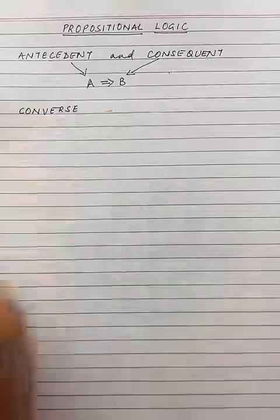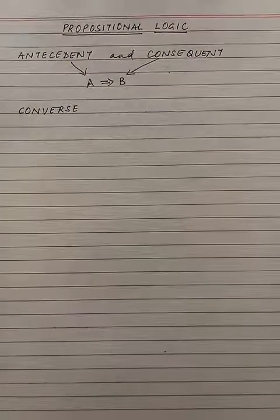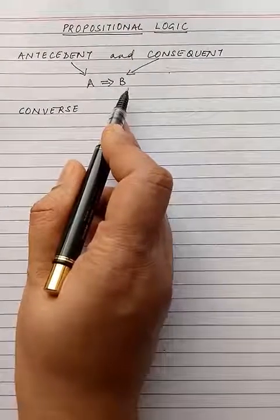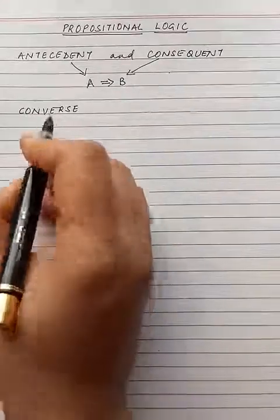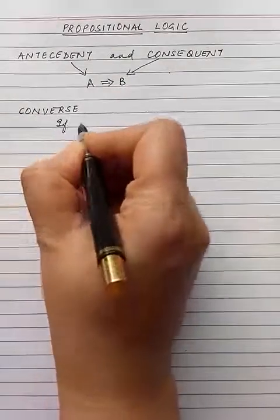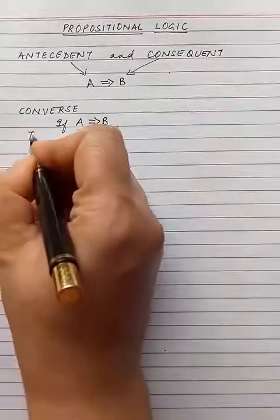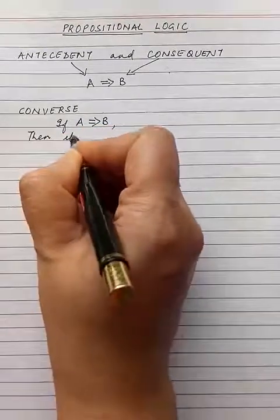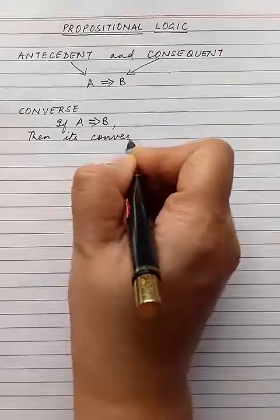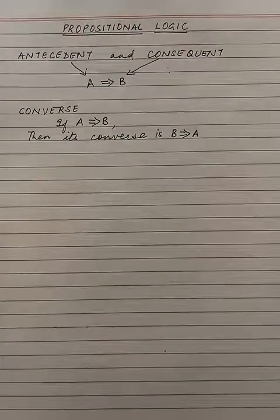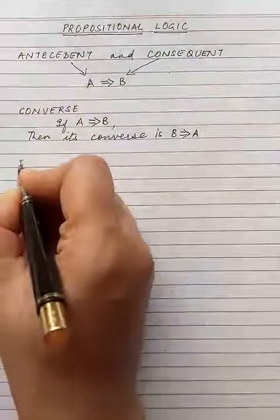The next term you should know is converse. The conditional statement obtained after interchanging the antecedent and the consequent is called the converse statement. That means if A implies B, then its converse is B implies A. This is called the converse.